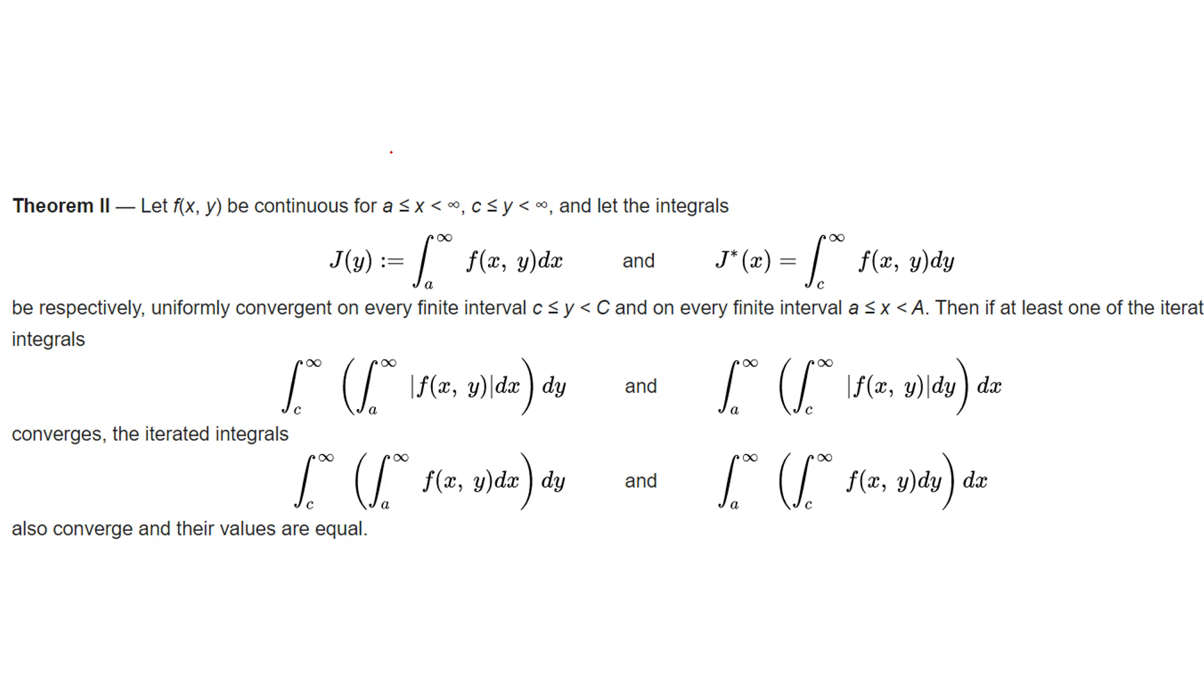The Fubini theorem is continuous from a to infinity and c to infinity. This is f, and these two integrations, one is J(y), one is J*(x), integrating along y and along x. Suppose that the two of them are both uniformly convergent on every finite interval.